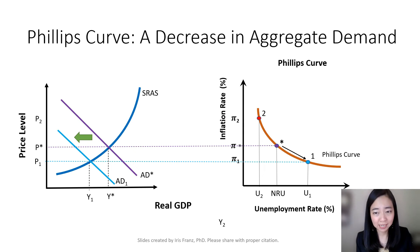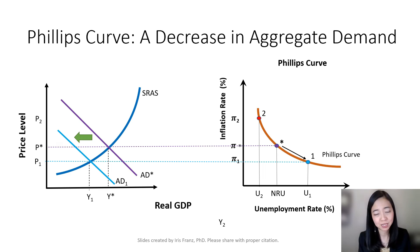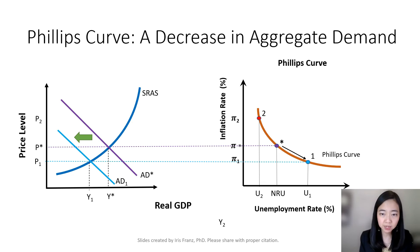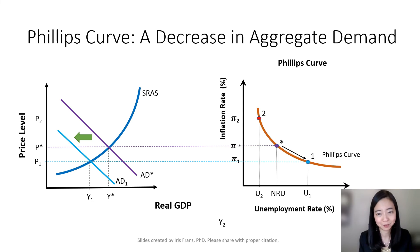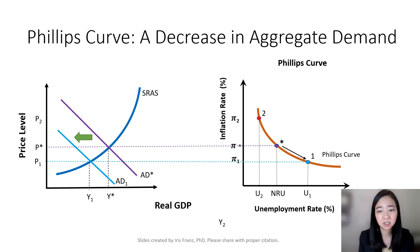If there is a recession, that will cause our aggregate demand curve to shift to the left. As a result, price level goes down and output goes down. Our new output level Y1 is lower than the potential output, meaning we will have cyclical unemployment — our unemployment level is higher than the natural rate of unemployment. At the same time, price level goes down from P* to P1, and our inflation rate also goes down from pi* to pi1, let's say from 2% to 1%.